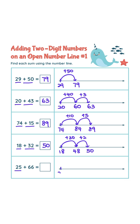25 plus 66. 25 plus 60 is 85. 85 plus 5 is 90. 90 plus 1 is 91. Answer is 91.